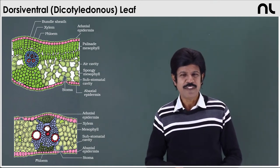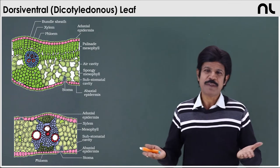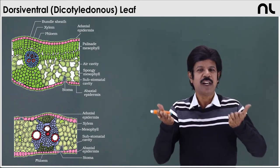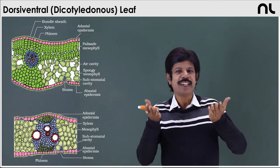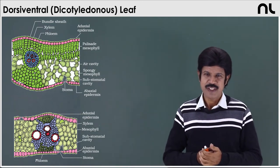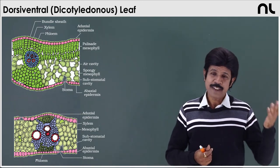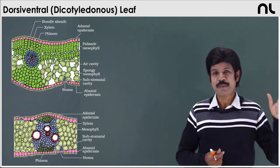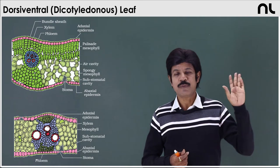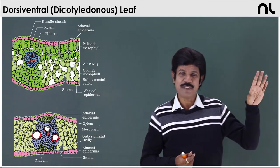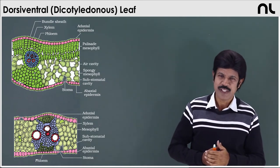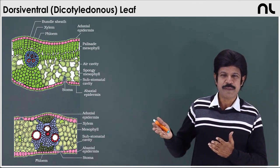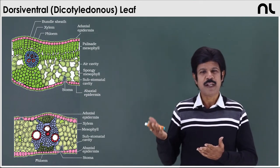In the case of the dicot leaf, more stomata are present in the abaxial (lower) epidermis, and few or no stomata are present in the adaxial (upper) epidermis. In the case of the monocot leaf, both epidermises have an equal number of stomata — so it is amphistomatous, meaning equal type, in the case of monocot. In the dicot, the lower epidermis has more stomata and the upper has few.